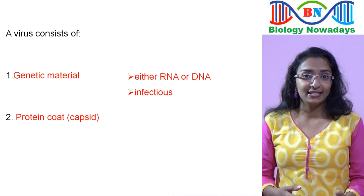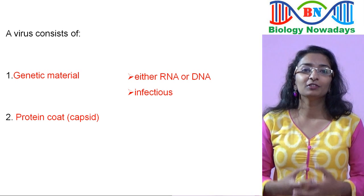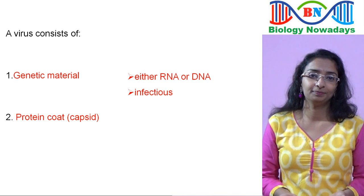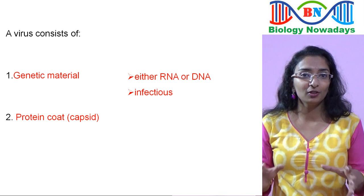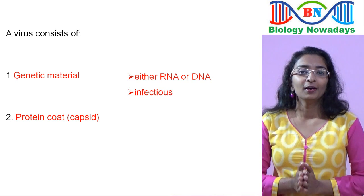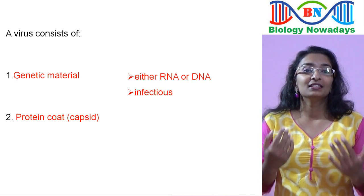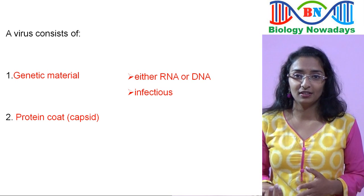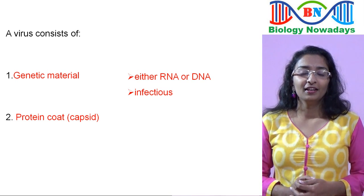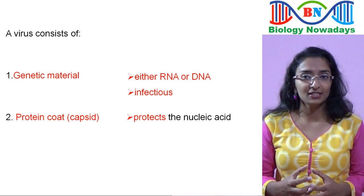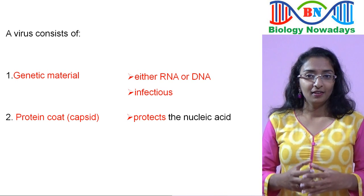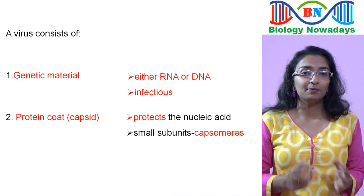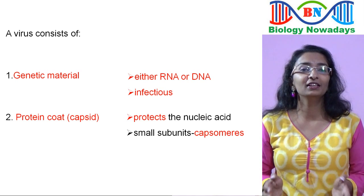When a virus attacks a host cell, the genetic material of the virus hijacks the host cell and compels it to produce viral components, disrupting the cell's normal behaviour. Viruses that infect plants have single-stranded RNA, while viruses that infect animals have either single or double-stranded RNA or double-stranded DNA. The function of the protein coat is to protect the genetic material (the nucleic acid). The protein coat is made up of small subunits called capsomers, which are arranged in helical or polyhedral geometric forms.